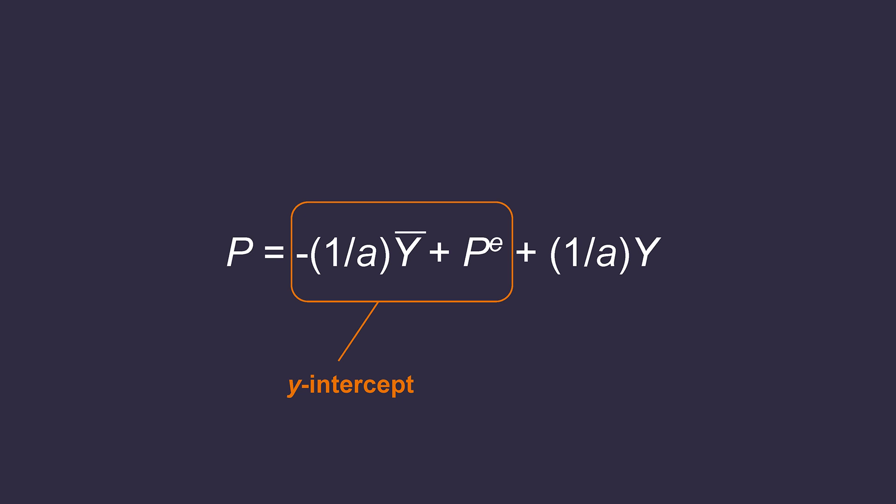Shifts in long run aggregate supply is caused by changes in potential output, and changes in potential output will shift the short run aggregate supply as well. If you look back to the short run aggregate supply equation, you will see that Y bar appears in the Y intercept portion. If Y bar is bigger due to economic growth, the Y intercept becomes smaller because of the negative sign in front of the coefficient. So this is going to reduce the Y intercept, causing the short run aggregate supply to shift outward or downward, along with an outward shift of long run aggregate supply.